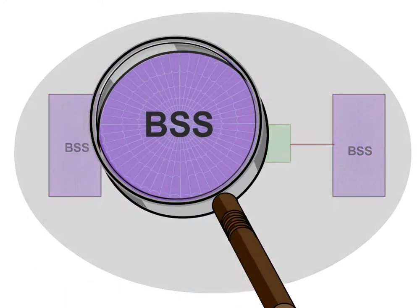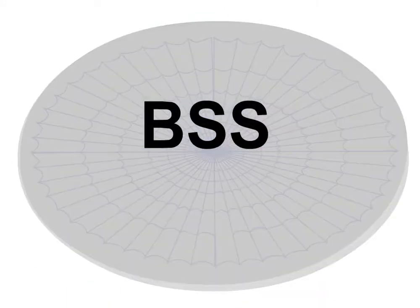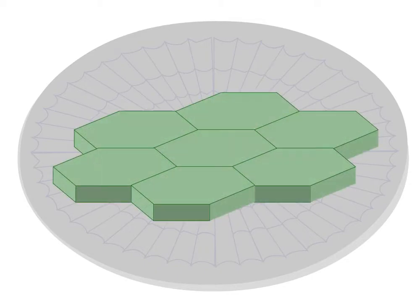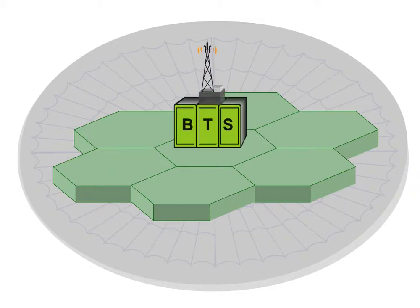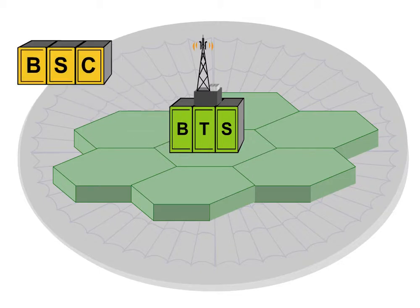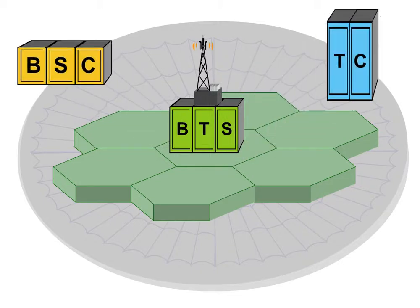The base station subsystem ensures as complete a network coverage as possible, and includes a large number of structurally organised radio cells. It consists of the following elements: the base transceiver station, the base station controller, and the transcoder.